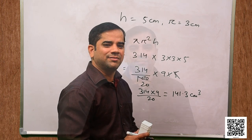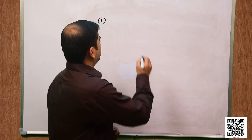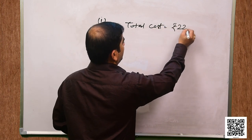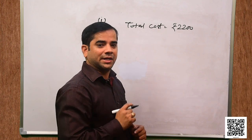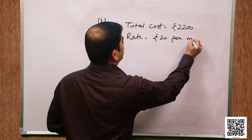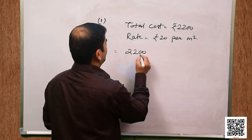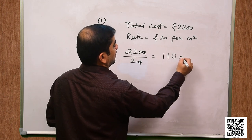Hope you understand the solution. Let us now discuss question number 5. It costs rupees 2200 to paint the inner curved surface of a cylindrical vessel 10 meter deep. The cost of painting is at the rate of rupees 20 per meter square. Find the inner curved surface area, radius of the base and capacity of the vessel.